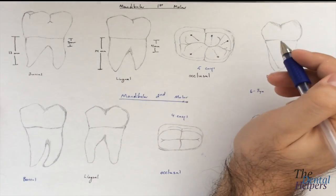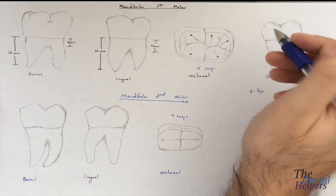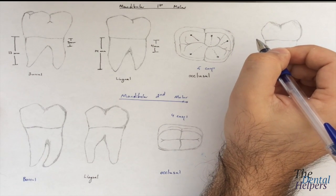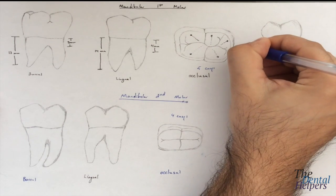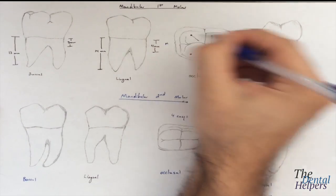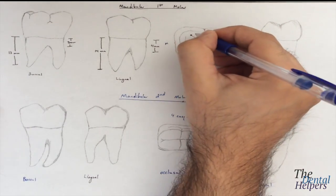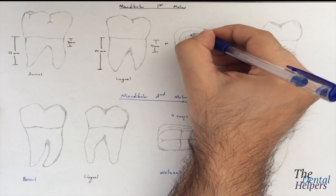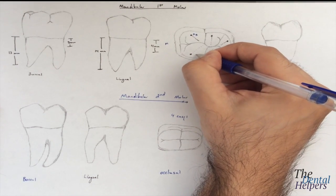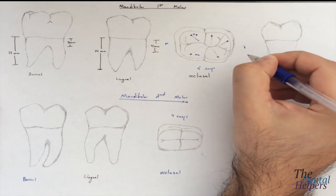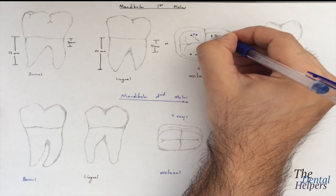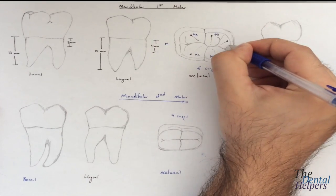In terms of the size of the cusp, the biggest cusp is actually the mesial buccal cusp. So we know that this is the distal, this is the mesial. The mesial buccal cusp is going to be right about here. Then we're going to have the mesial lingual cusp next, the distal lingual cusp, the distal buccal cusp, and the distal cusp.